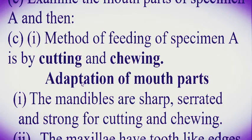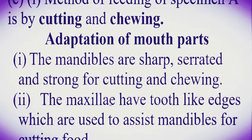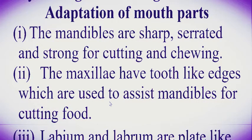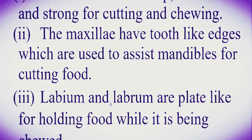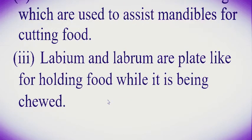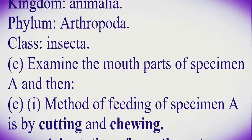The mouth parts have mandibles which are sharp, serrated, and strong for cutting and chewing. Another adaptation — it has maxillae which have two jagged edges used to assist the mandibles for cutting food. Adaptation number three — the mouth parts have a labium and labrum which are plate-like for holding food while it is being chewed.